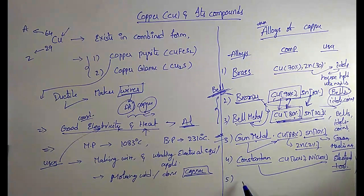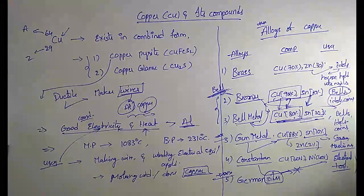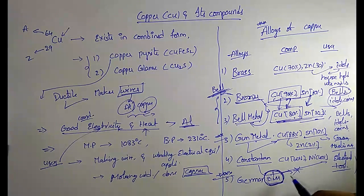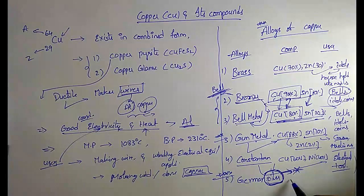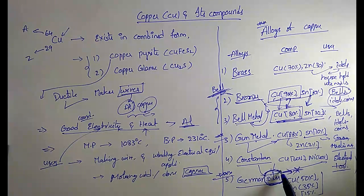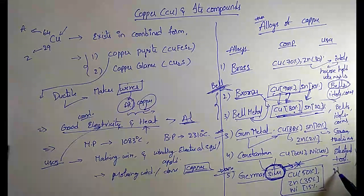The next very important alloy is German silver. Although the name contains silver, there is no silver in its composition — be aware of this. The composition of German silver is copper 50%, zinc 35%, and nickel 15%. This is also used to make idols and some utensils.